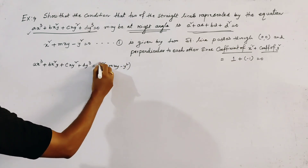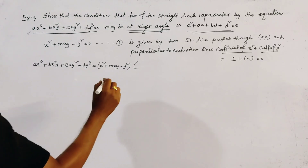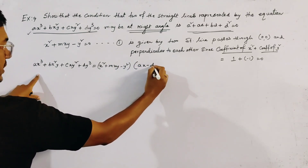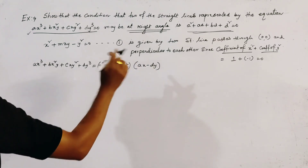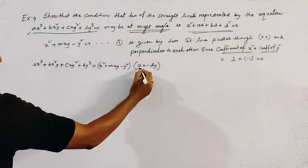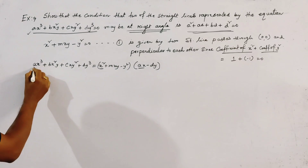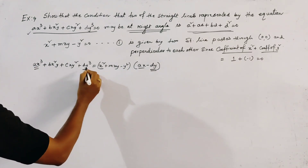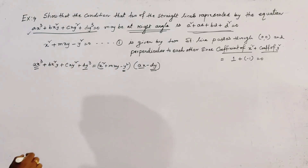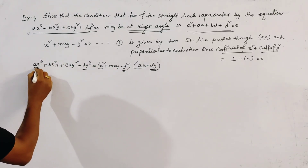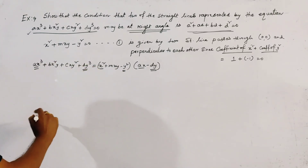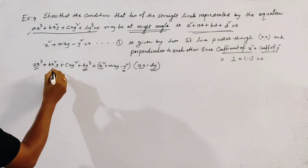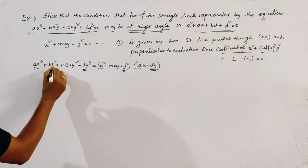We equate the given equation ax³ + bx²y + cxy² + dy³ = 0 with (x² + mxy - y²)(ax - dy). We choose (ax - dy) as the linear factor because if we multiply ax with x² we get ax³, and if we multiply dy with y² we get dy³, so the coefficients of x³ and y³ are correctly matched.